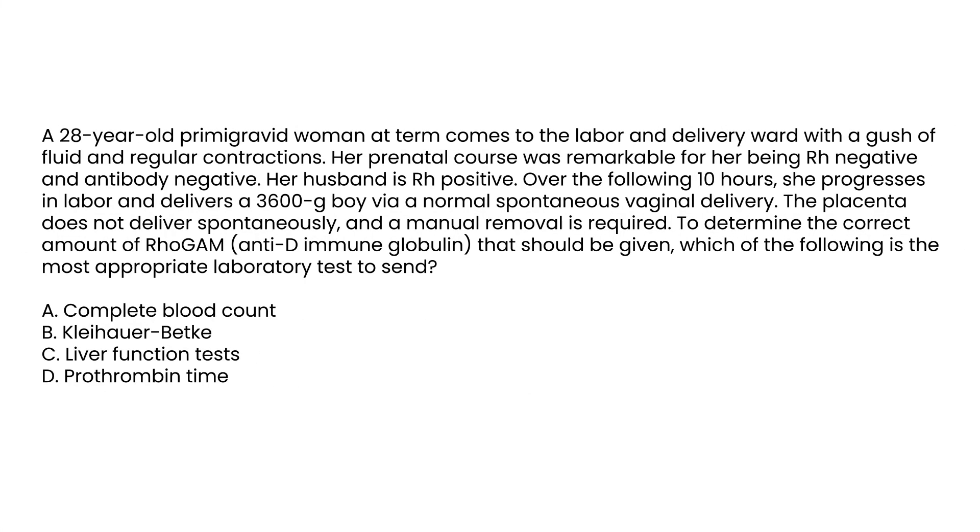Let's take a look at some clinical vignettes. A 28-year-old primigravid woman at term comes to labor and delivery ward with a gush of fluid and regular contractions. Her prenatal course was remarkable for her being Rh negative and antibody negative. Her husband is Rh positive. Over the following 10 hours, she progresses in labor and delivers a 3600 gram boy via normal spontaneous vaginal delivery. The placenta does not deliver spontaneously, and a manual removal is required to determine the correct amount of RhoGAM anti-D immunoglobulin that should be given.